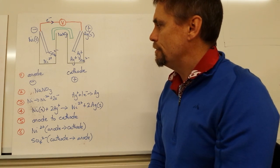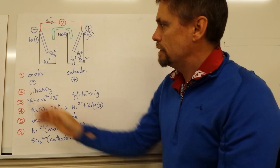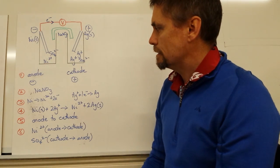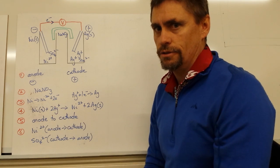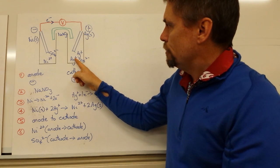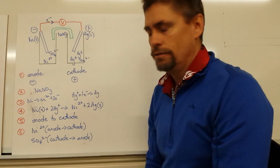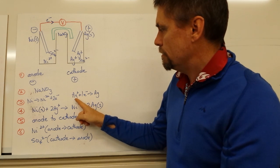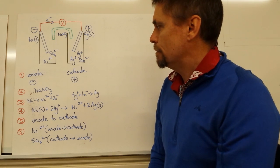Step three: we write down our two half-reactions. At the anode on the left, nickel solid goes to nickel 2+, giving up two electrons. The reduction reaction on the right shows silver ions in solution being reduced: silver ion plus one electron gives silver solid. Step three is complete.